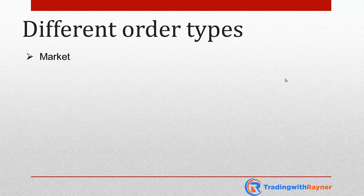Let's understand the different order types that you can use as a trader. The first order type is called a market order. A market order simply means that you can buy the financial security right now at whatever price it is currently trading at. You'll pay the market price — it means you want something right now.